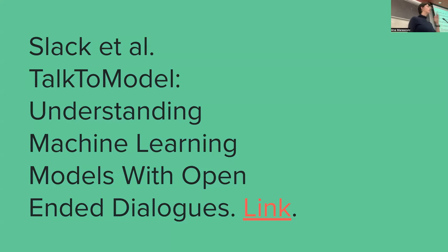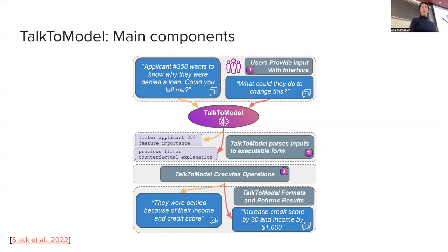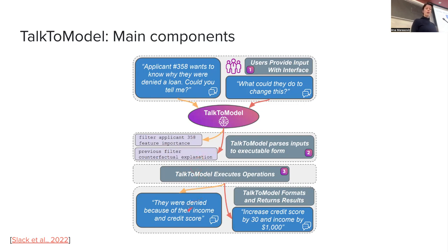One of these methods, produced by the same people, is called 'Talk to Model.' This is an overview of Talk to Model. It has a question — for example, 'Applicant number 358 wants to know why they were denied the loan. Could you tell?' Then the system needs to parse this into something it can execute. For example, you can imagine this is a call to different functions, such as filter by applicant 358, and then run feature importance for that slice of data, such that you get only data points related to this person.